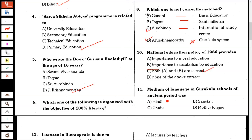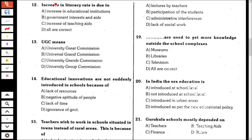The medium of language in Gurukula schools of the ancient period was Sanskrit. Increase in literacy rate is due to all are correct. UGC means University Grants Commission.